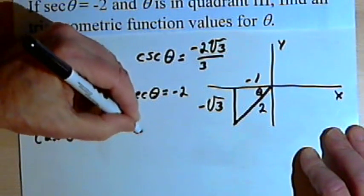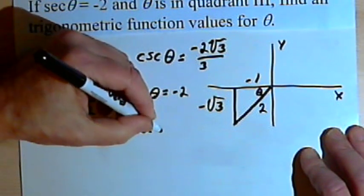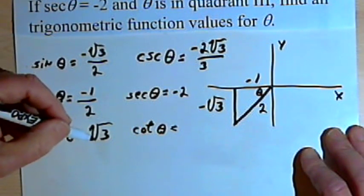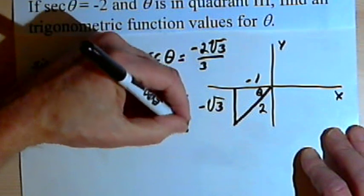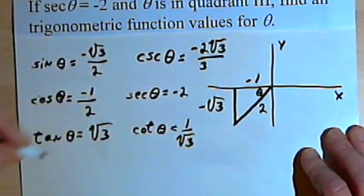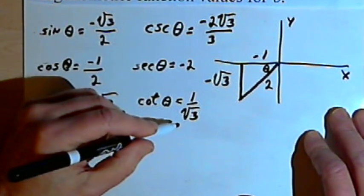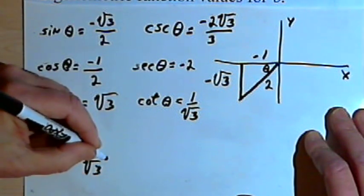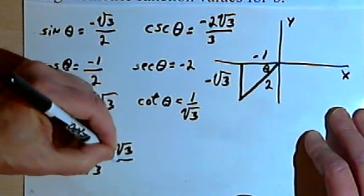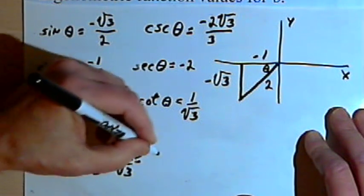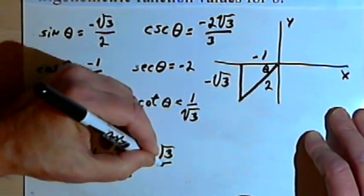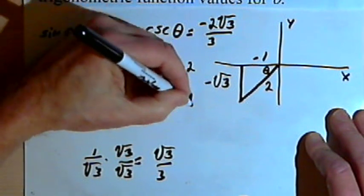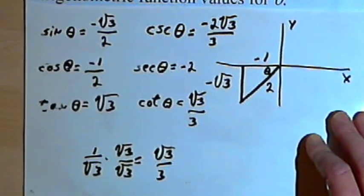And for the cotangent, the reciprocal of the tangent, I had square root of 3, which is like square root of 3 over 1, so that's 1 over the square root of 3. And once again, let's rationalize that denominator. So that's going to be 1 over the square root of 3 times the square root of 3 over the square root of 3, which is the square root of 3 over 3.